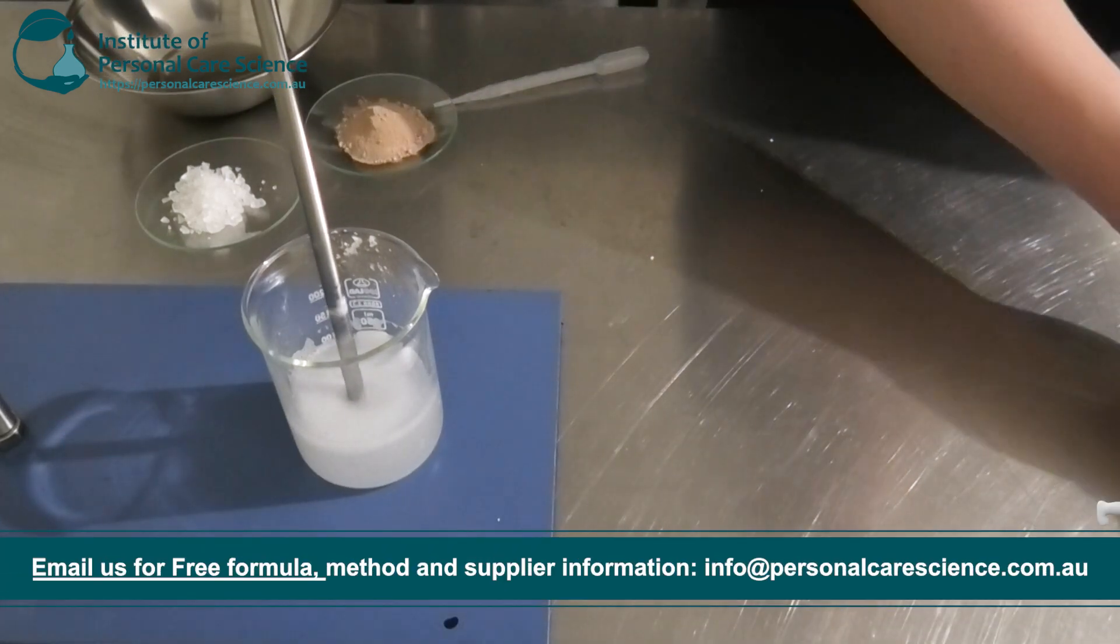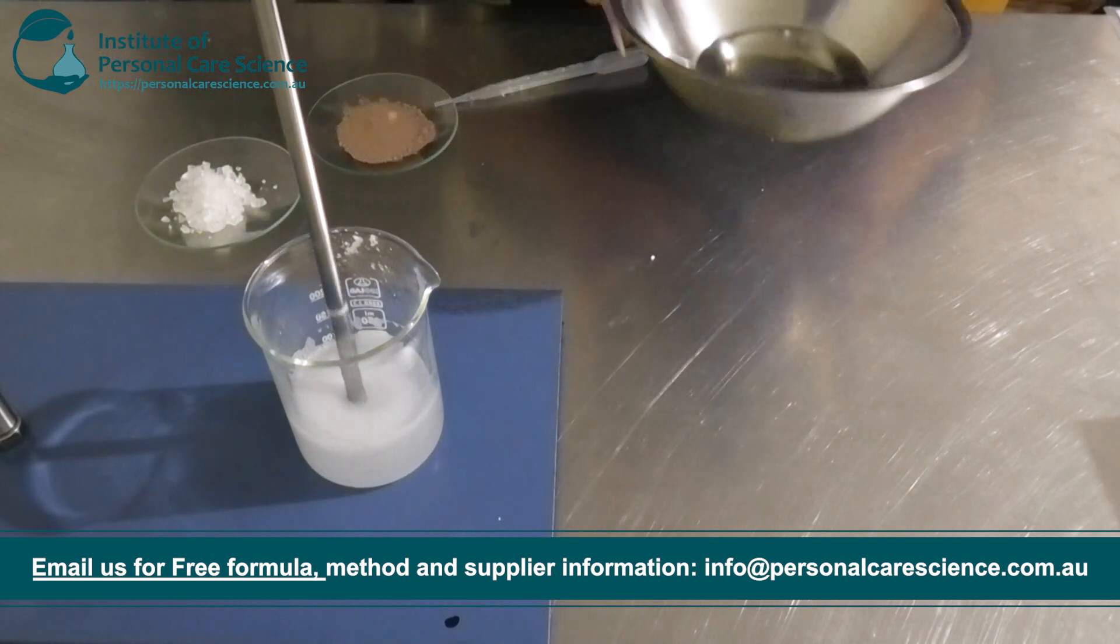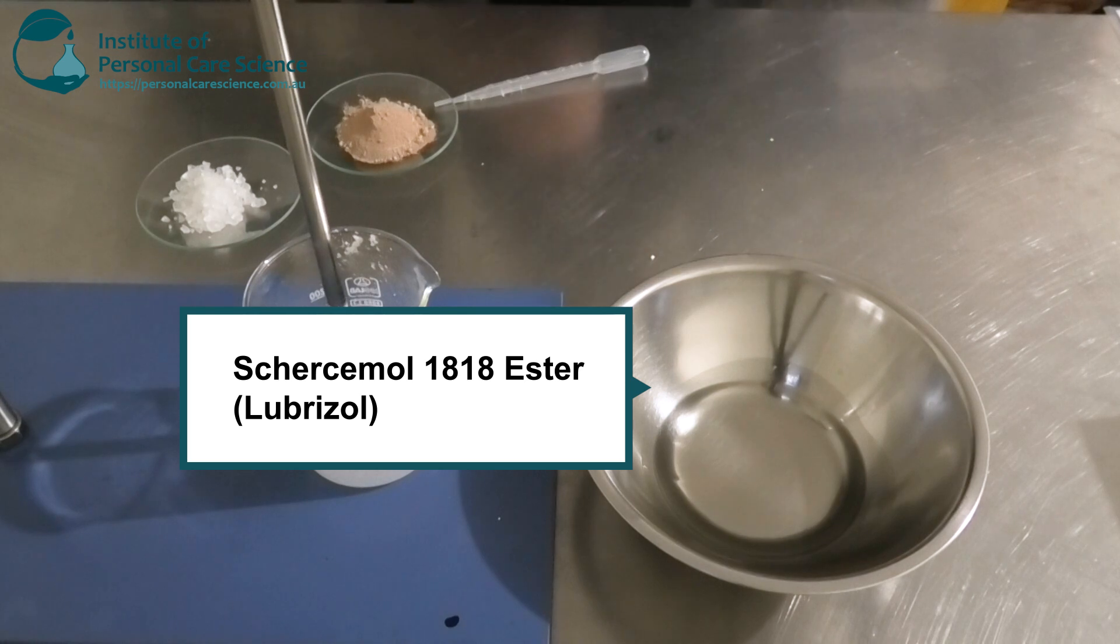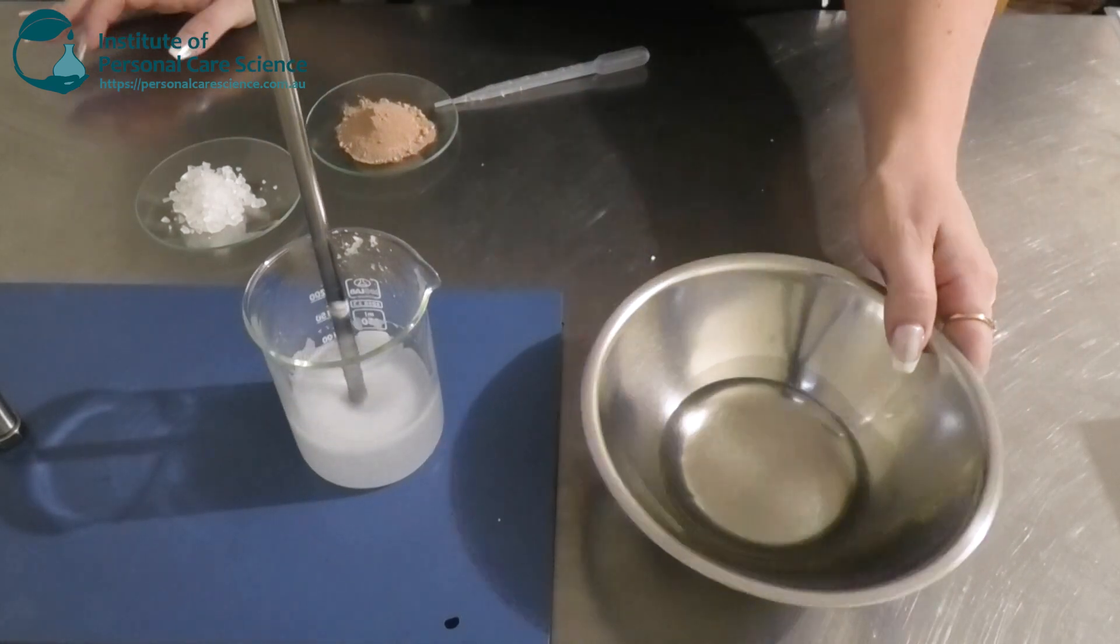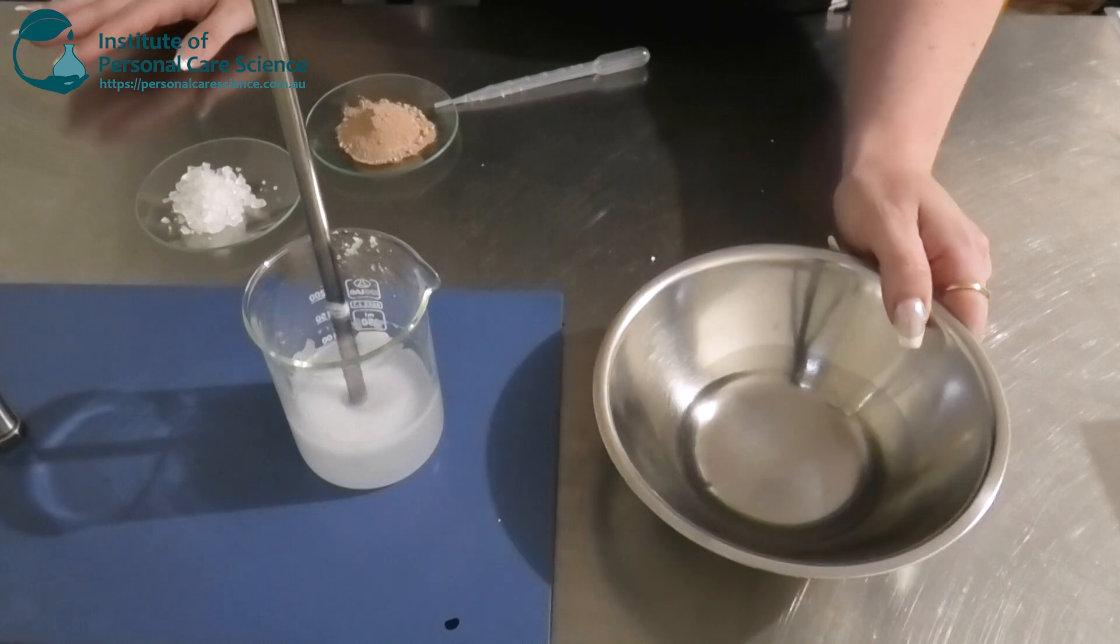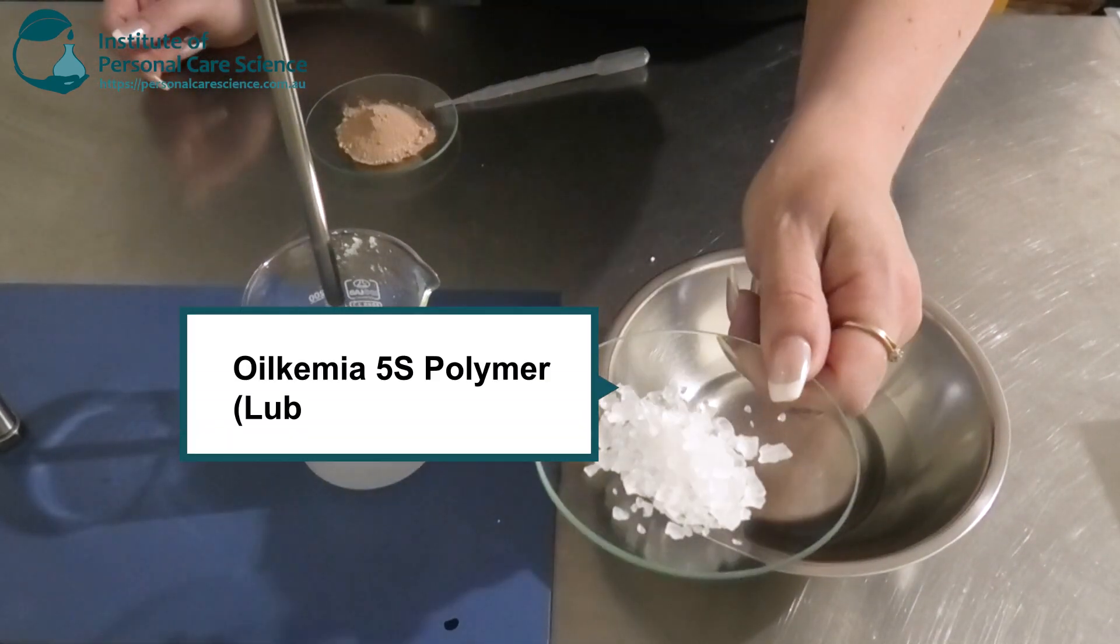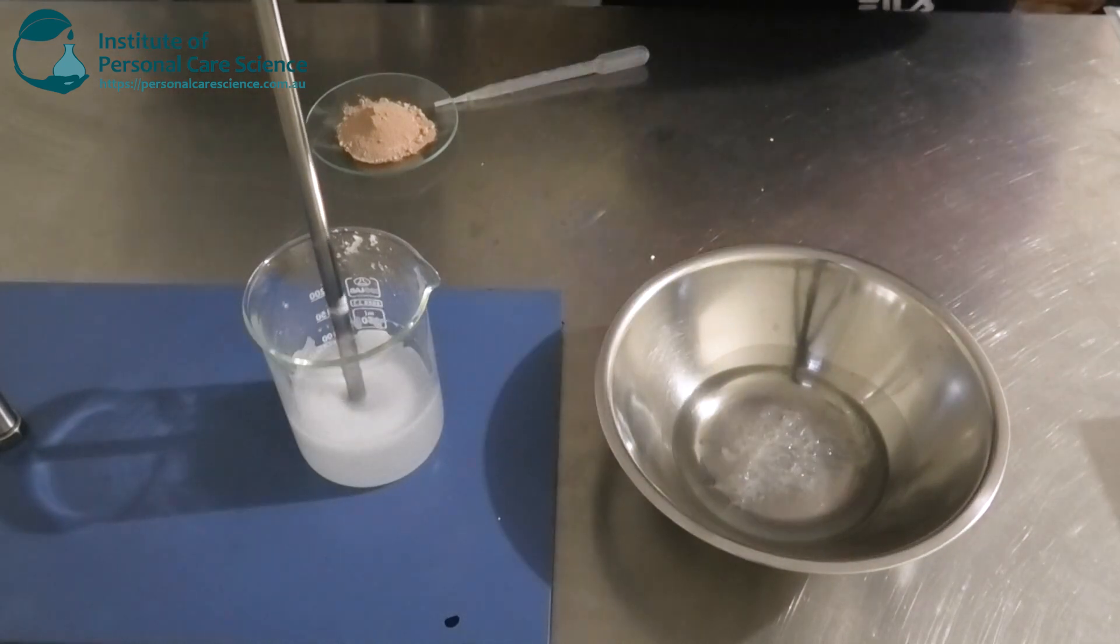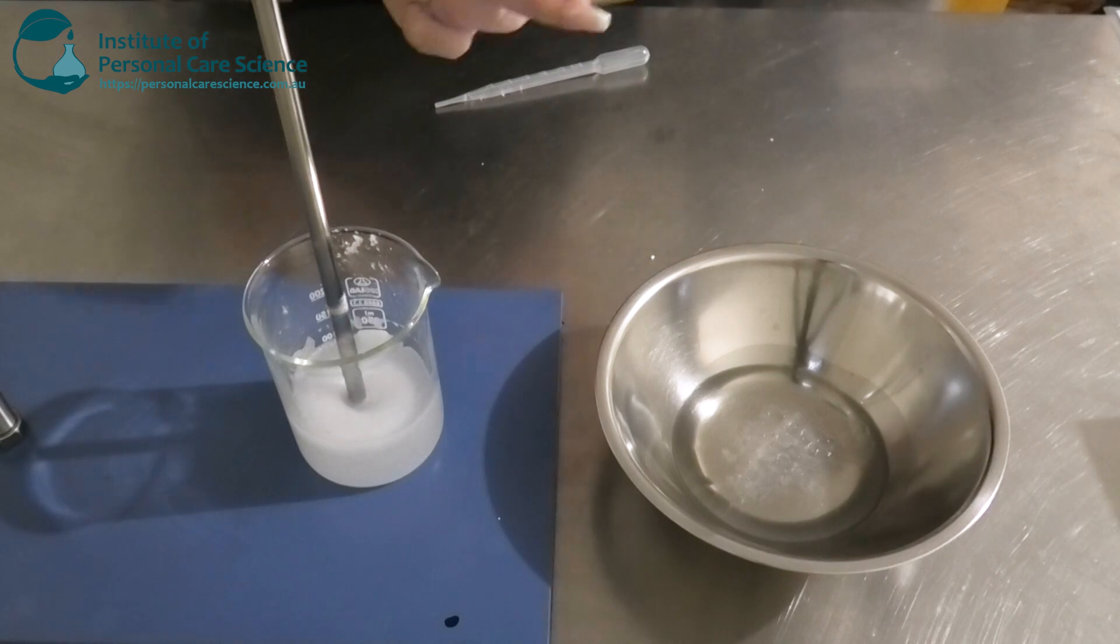And while that's stirring, we're going to put together our pre-mix color phase. So in my bowl here, I have the Ceraphyl 1818 Ester by Lubrizol. This is a really nice light feeling ester. So you don't want anything too heavy and greasy on the skin. To this, I'm going to be adding some Oleogelma. This is also by Lubrizol. So this is an oil compatible rheology modifier.